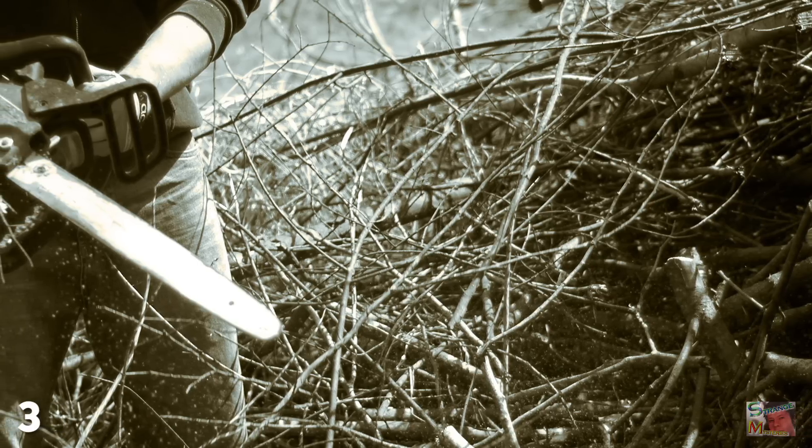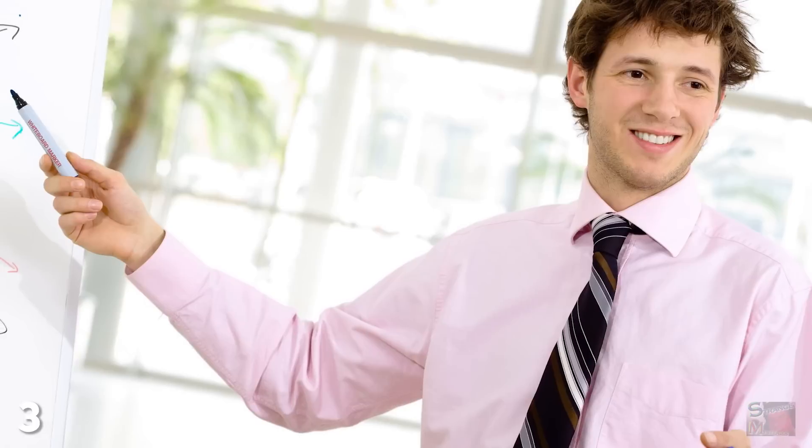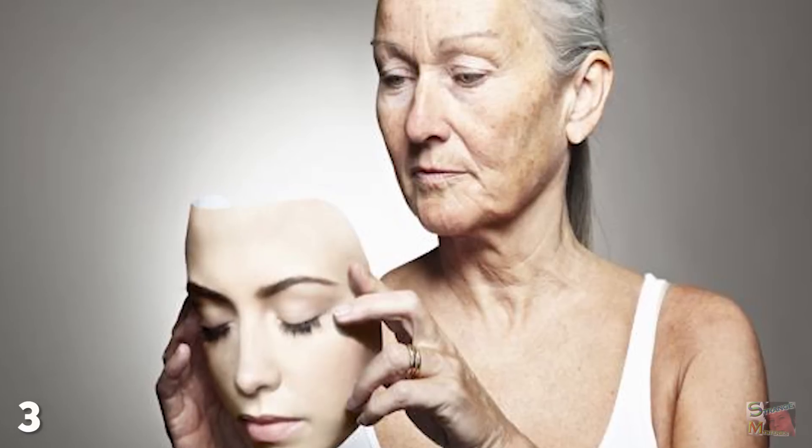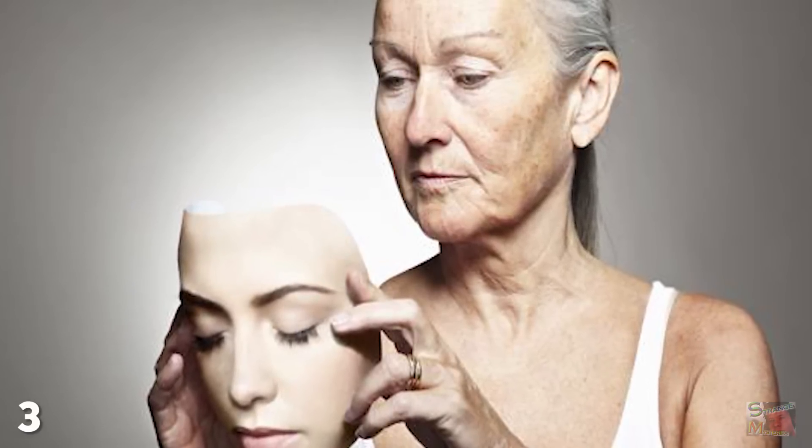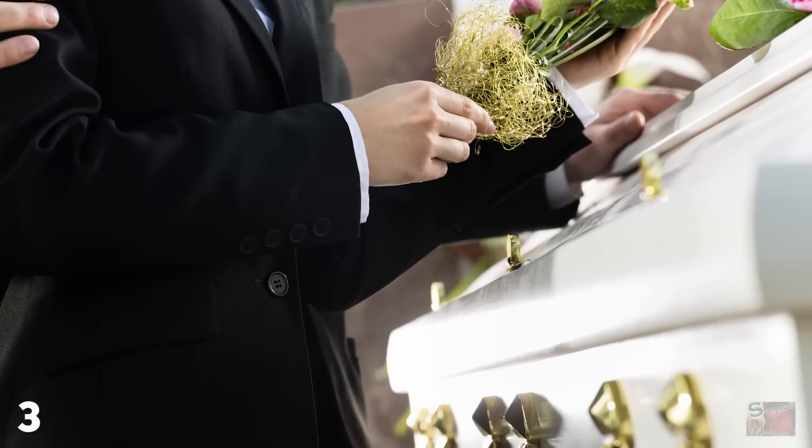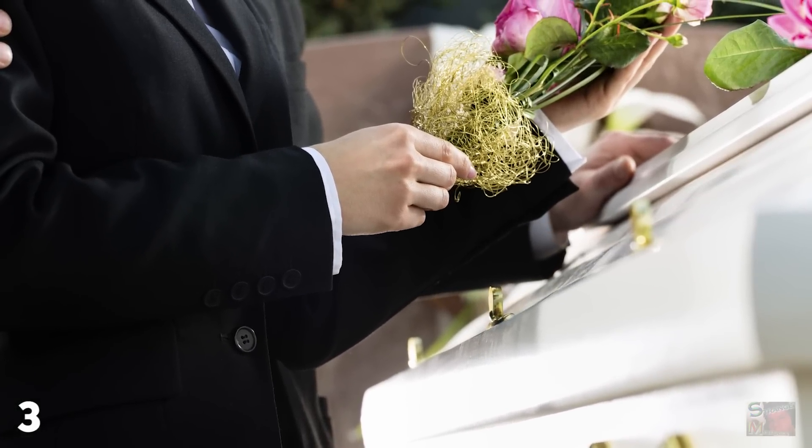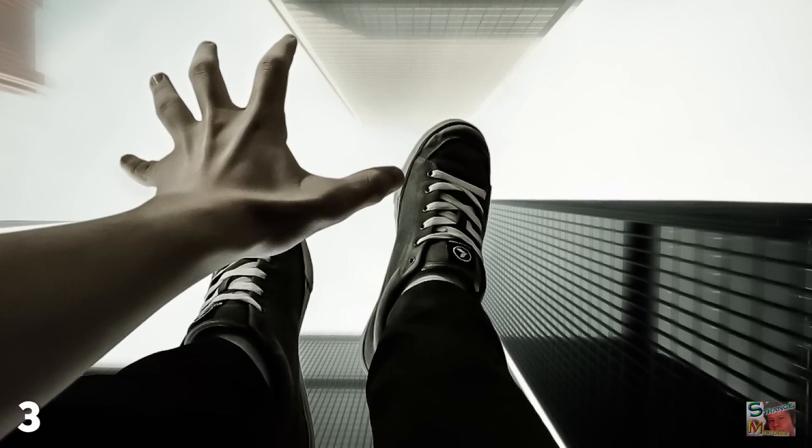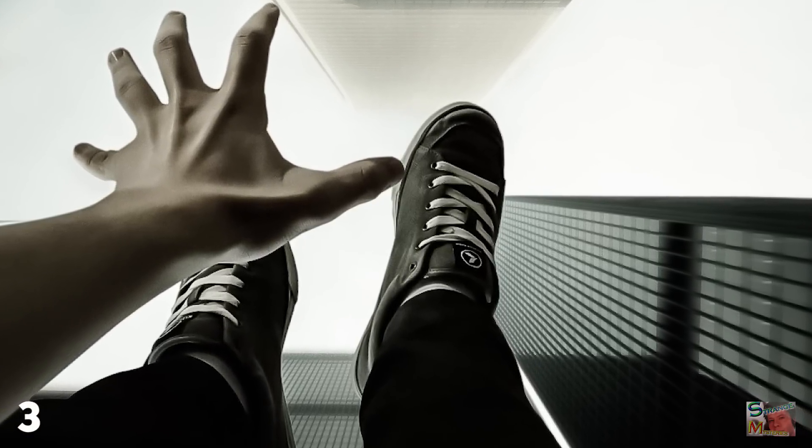However, before you go taking a chainsaw to your face, we should point out that there are some serious flaws in this idea. First, it doesn't quite explain what happens to humans when they reach old age. Because at some point we all have to die. And second, there's no possible way of proving this theory without one person ending their own life. And it's pretty hard to get funding for that kind of experiment. Who knew?